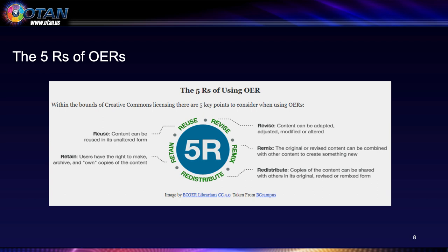When we talk about OERs, we need to discuss the five R's: repurpose, reuse, revise, remix, redistribute, and retain. Content can be adapted, adjusted, modified, or altered. In order for a resource to be considered a true OER, it must contain these five key points.